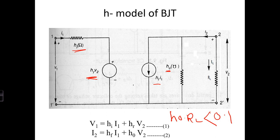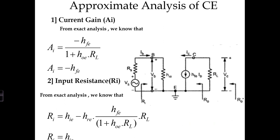In approximate analysis, we discard HR and H0. If you discard these two, we get simplified analysis. You can see here only HIE is present, no HR, and only HFE is present, no H0. Using this model, we can easily find different parameters.